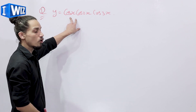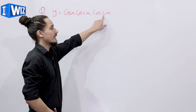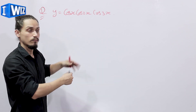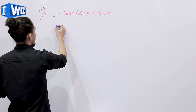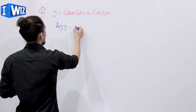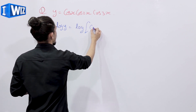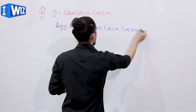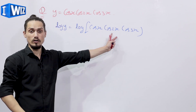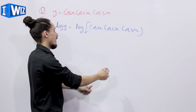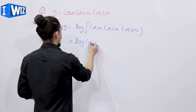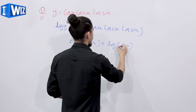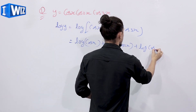We are given a function y = cos x times cos 2x times cos 3x and we have to find its derivative. Since three functions are multiplied, we will take log on both sides. Taking log on both sides, we get log y = log(cos x · cos 2x · cos 3x), which becomes log cos x + log cos 2x + log cos 3x.